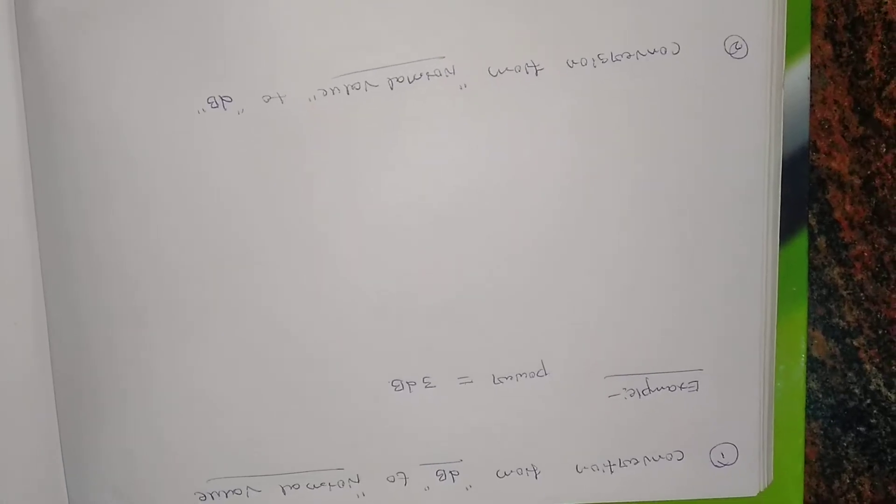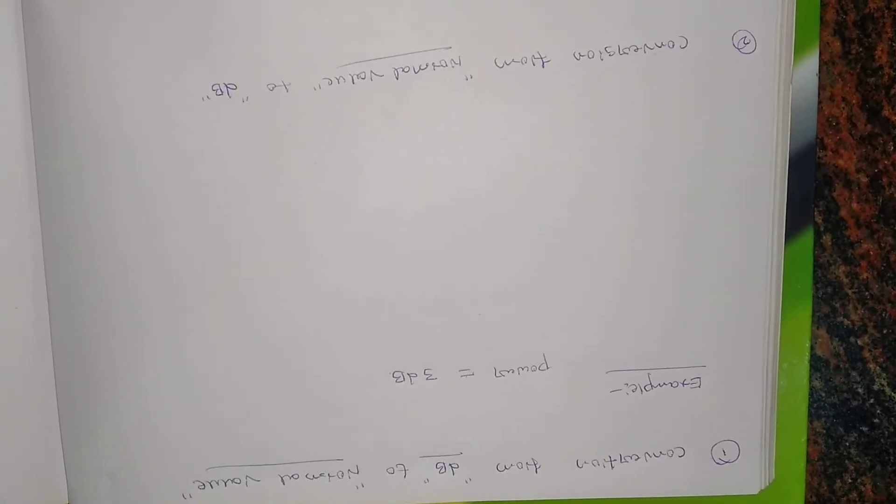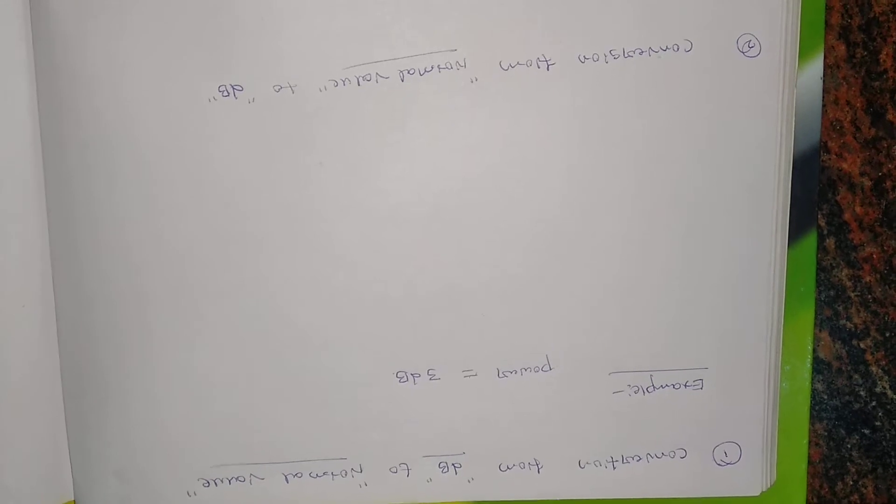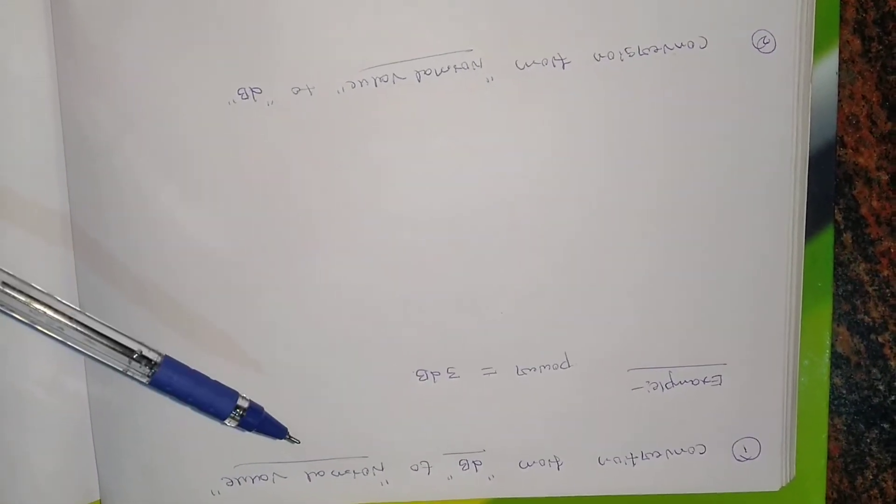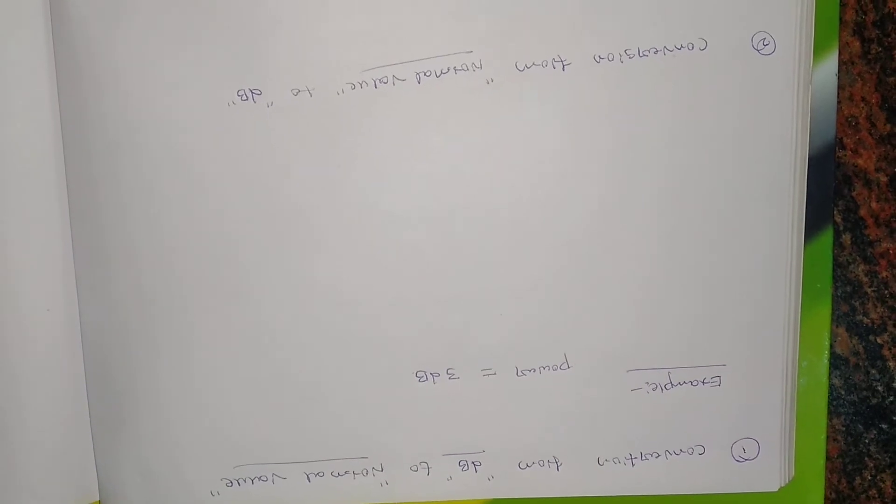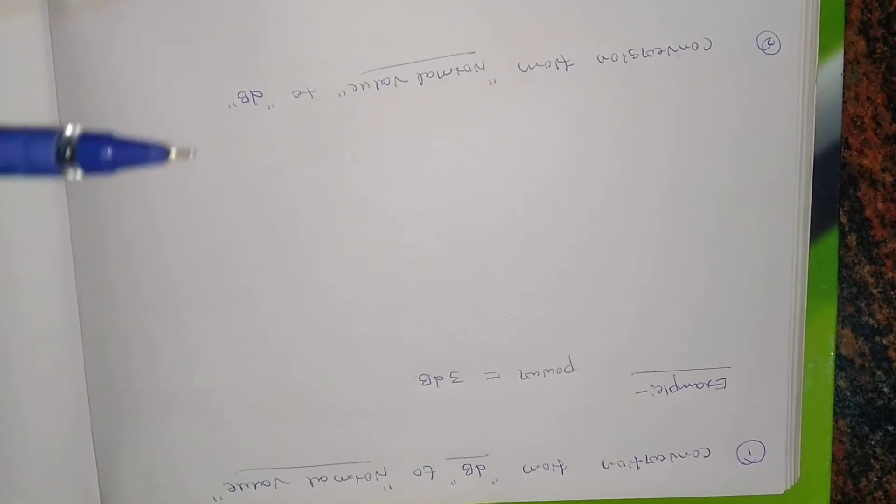So we are taking an example here. Let us say the power is given as 3dB, right? So we need to convert this 3dB to the normal way, or I can say the decimal number system.